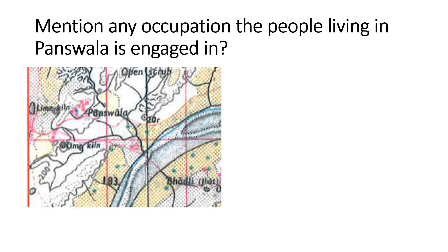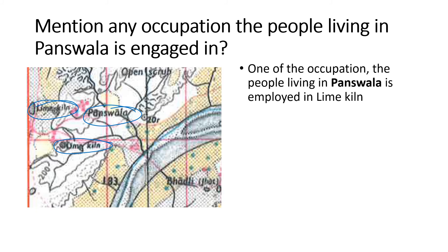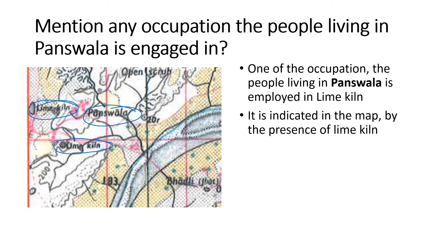Mention any occupation the people living in Pantswala are engaged in. Around Pantswala, we can see one lime kiln here and another lime kiln outside. So you can write that one occupation of the people is working in lime kilns, as indicated by the presence of two lime kilns on the map. You can also write that people might be engaged in agriculture because of lots of yellow wash. Please do not write fishing — such a small, thin stream cannot support a family throughout the year, so never write fishing when it is next to a very small thin line river.